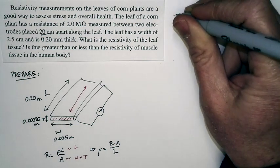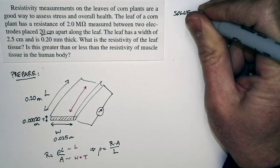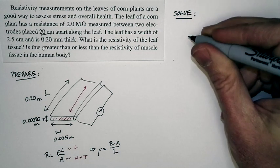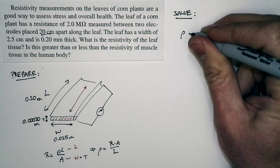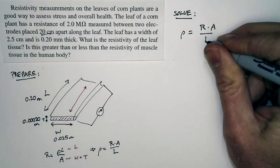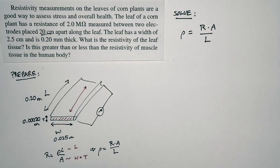Well, now we've got things set up where we can solve this. Because we have the resistance, we have the area, and we have the length. And so it's a pretty straightforward solution. Resistivity is equal to resistance times area divided by length. And let's think about what those different values are.